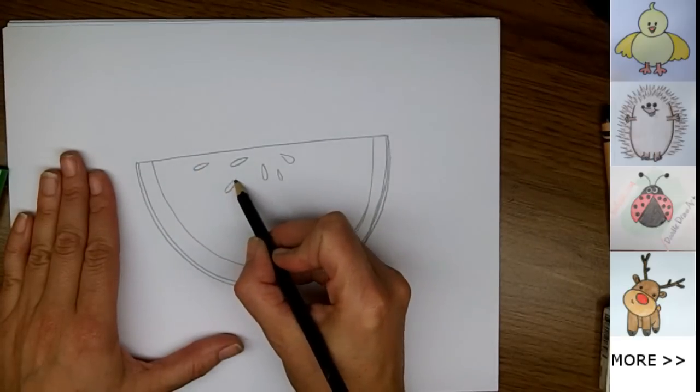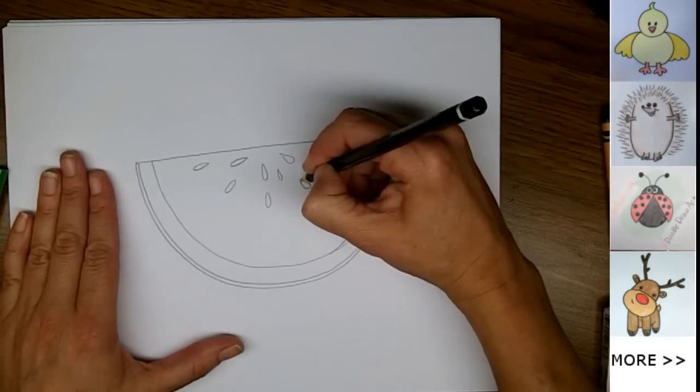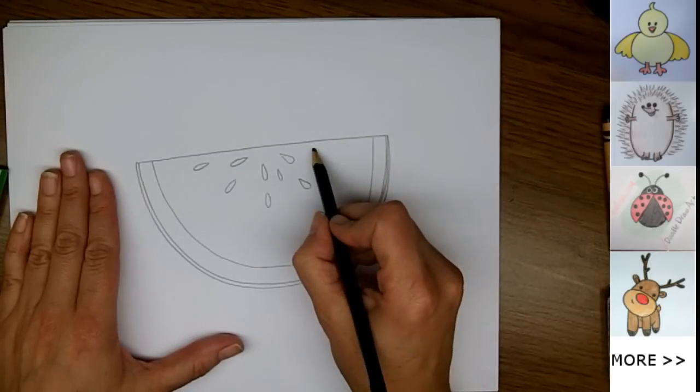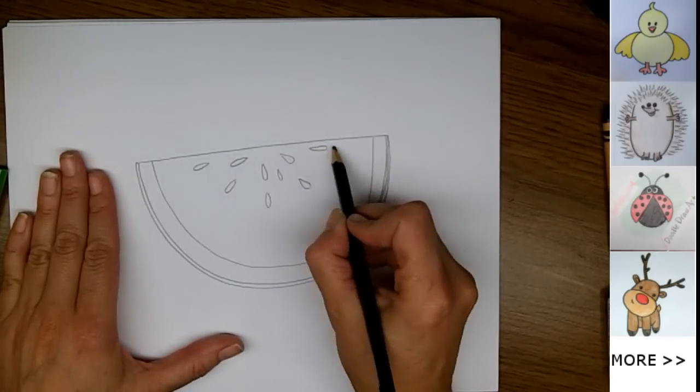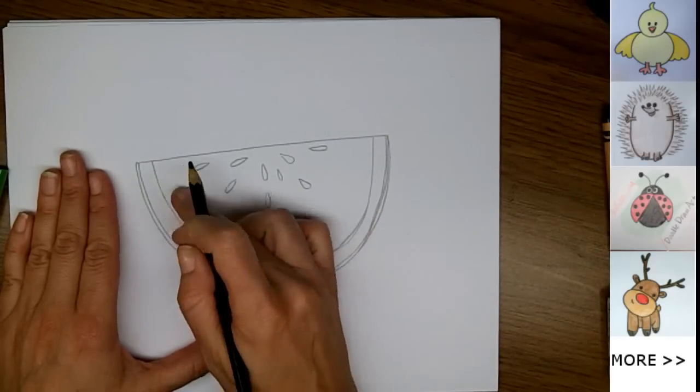They don't have to be perfect, and they don't have to line up with each other, but they should all move around the watermelon in an arching shape. They'll all be pointing in this direction.